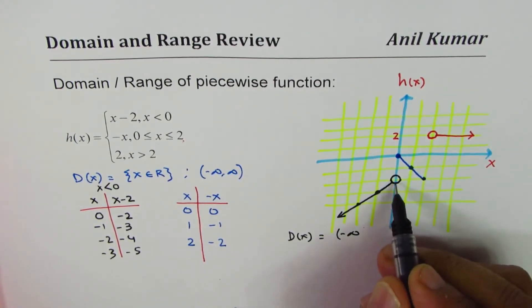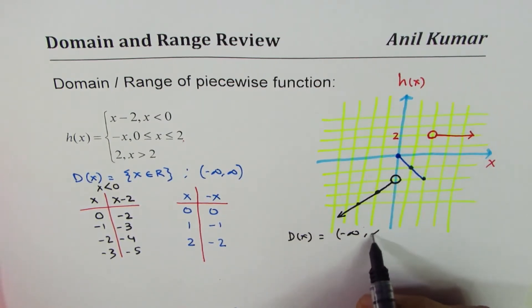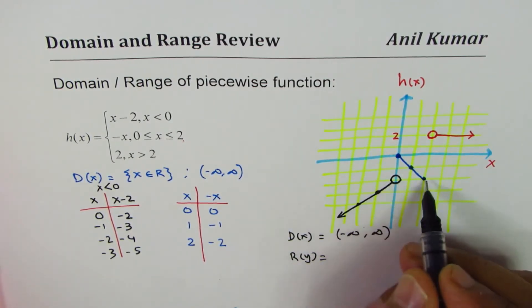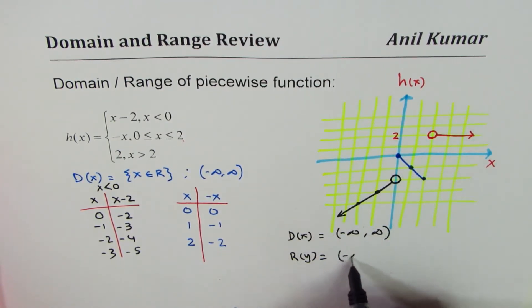So we can write domain here as equal to, we can say from minus infinity, this point is connected, let's say this is also connected, so it is from minus infinity to plus infinity.